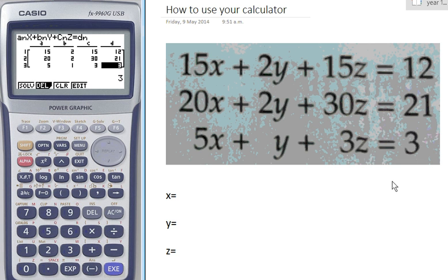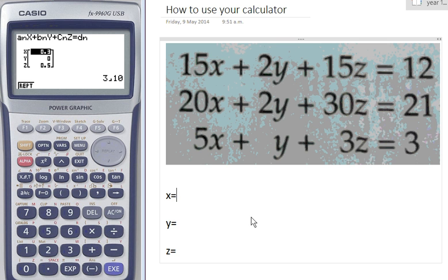Once that's all in there, all we have to do to solve this is press EXE. And it gives us our 3 solutions. So our solution of X is 0.3, and our solution for Y is Y equals 0, and our solution for Z is Z equals 0.5. And that's it.